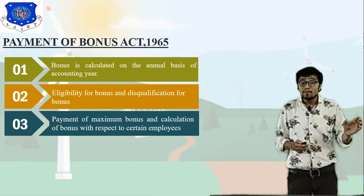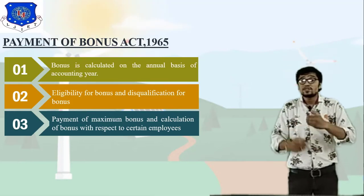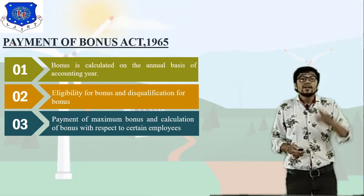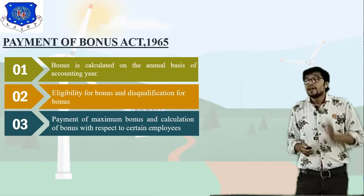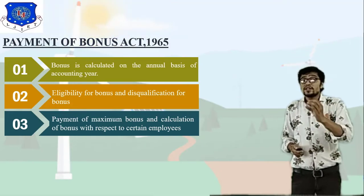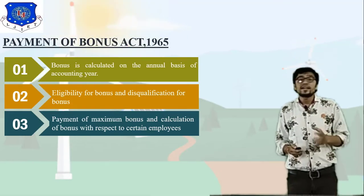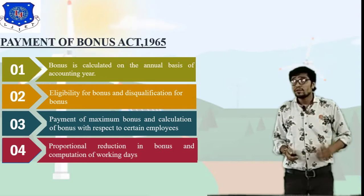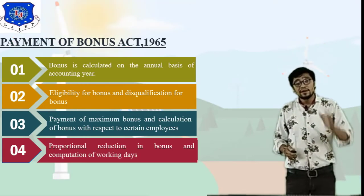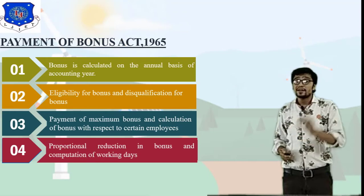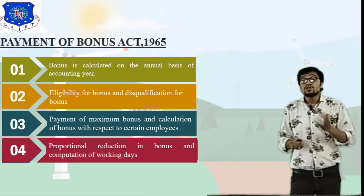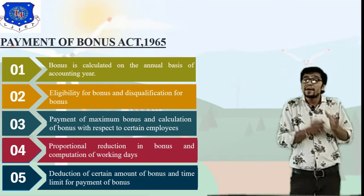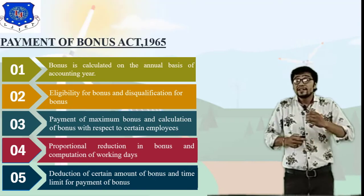The third important point is the payment of maximum bonus and calculation of bonus with respect to certain employees — these rules are also decided by the management. The fourth point is proportional reduction in bonus and computation of working days. Bonus is calculated on the annual basis of the accounting year.